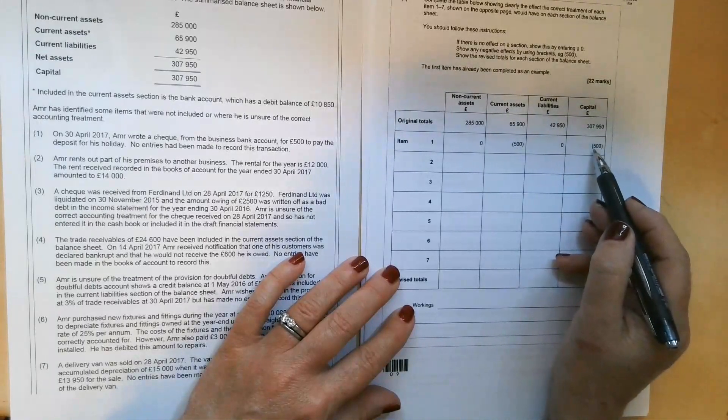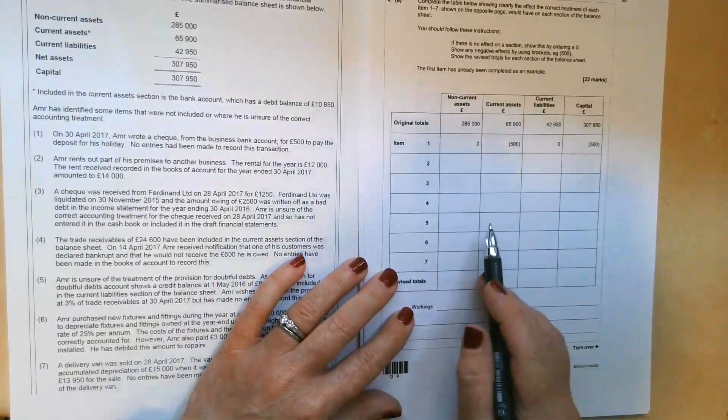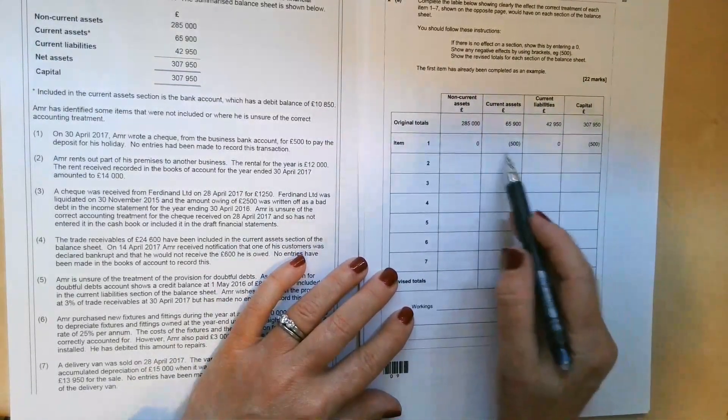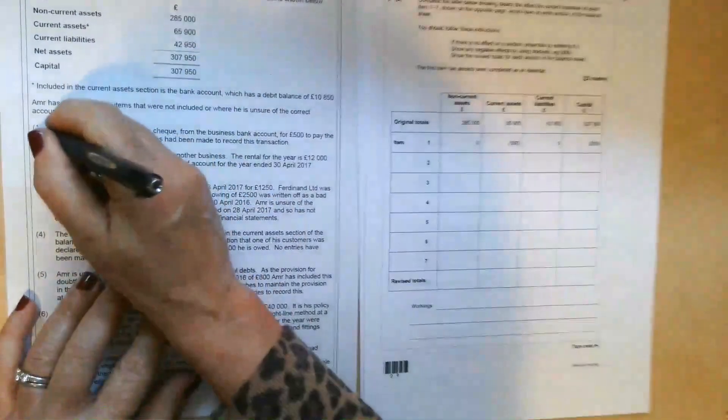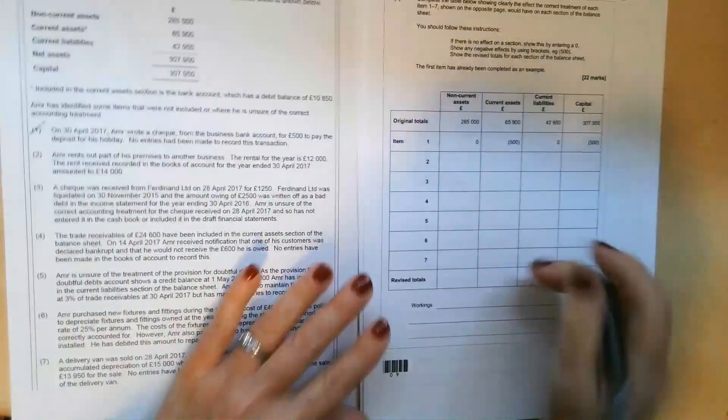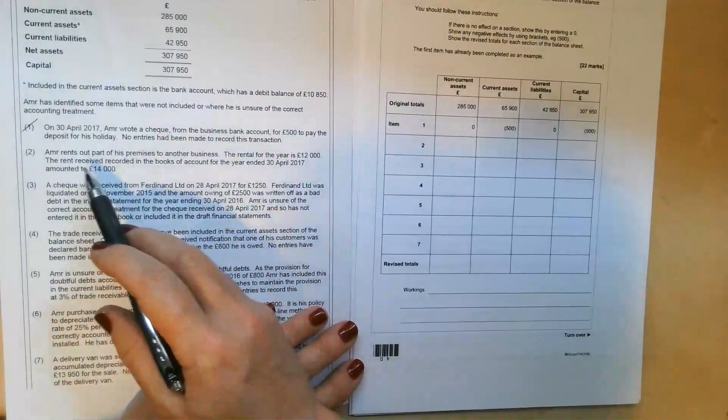The deposit on holiday is a personal expense. So that's going to be added to his drawings. And if you think about it, drawings has a negative effect on the capital of the business. So deduction from current assets for the bank, and the deduction because of the drawing. So we can tick that one off, not going to get any marks for that. But at least we understand the process before we move on.